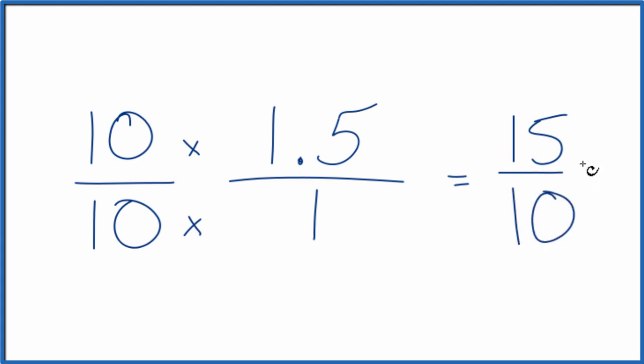So we have an improper fraction. The decimal 1.5 gives us this improper fraction 15 over 10. We say it's an improper fraction because the top number, the numerator, is larger than the denominator.